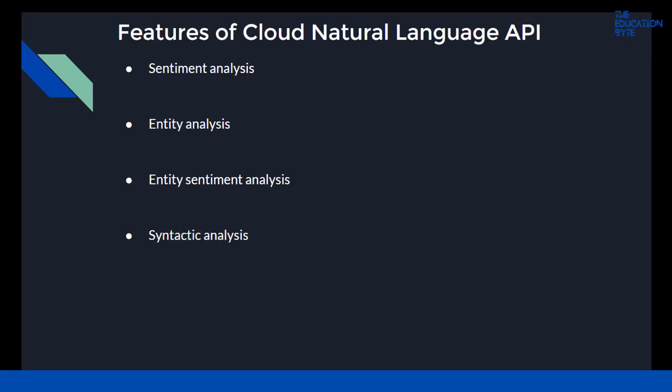Syntactic analysis extracts linguistic information, breaks up the given text into a series of sentences and tokens — generally word boundaries — providing further analysis on those tokens. Syntactic analysis is performed with the analyze syntax method. Content classification analyzes text content and returns the content category for the content, and is performed using the classify text method.